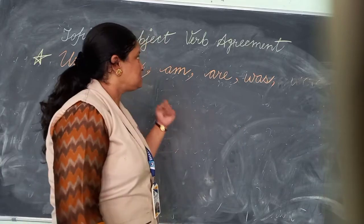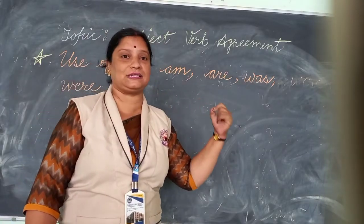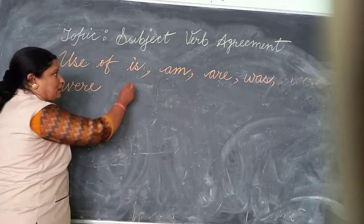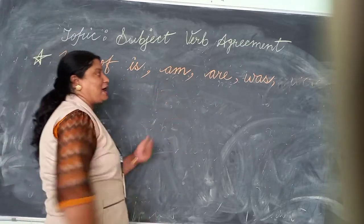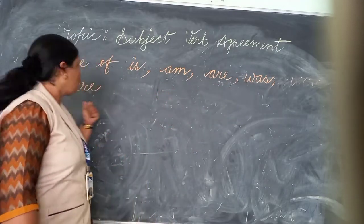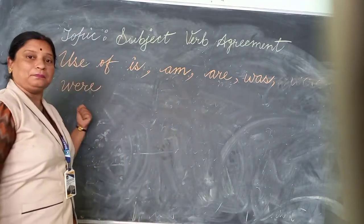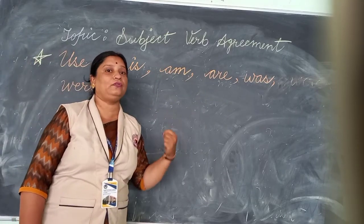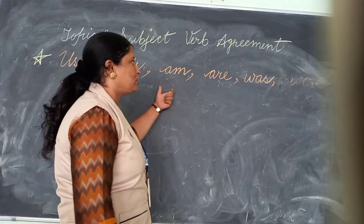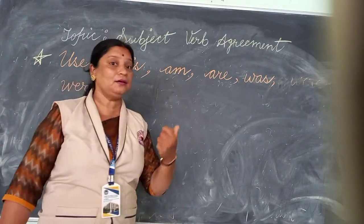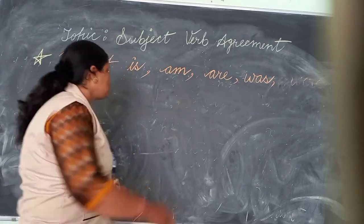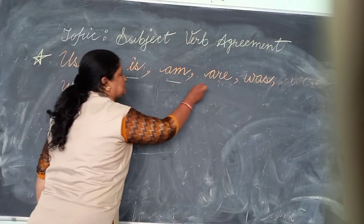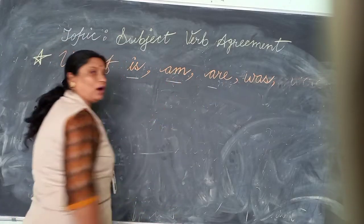The verbs which are used to describe the state of being are: is, are, was, and were. Today we will learn how to use these words in a sentence. So first of all we will talk about is and are.